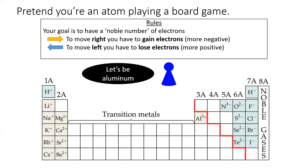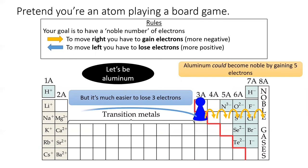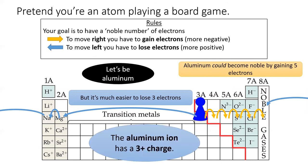I like to pretend I'm playing a board game with the elements. The goal is to get your element to the column that is the noble gas column in the fewest number of moves. Moving to the right causes you to gain an electron. Moving to the left causes you to lose an electron. Let's pretend we're aluminum. Aluminum could become noble by gaining five electrons, moving five spaces to the right. However, it takes fewer moves for aluminum if it instead loses three electrons, moving three spaces to the left. Therefore, the aluminum ion tends to lose three negatively charged electrons and has a three-plus charge at the end.